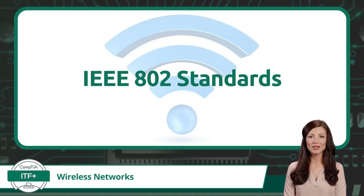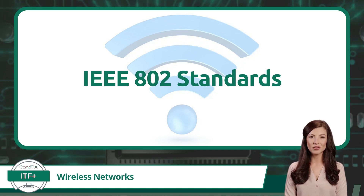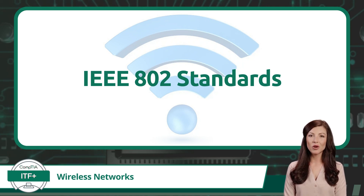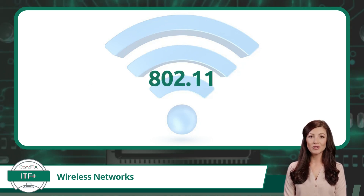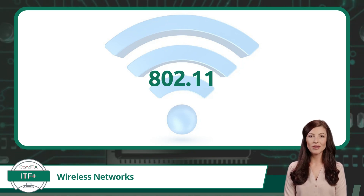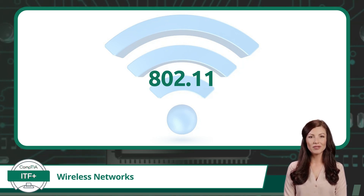Now we know who develops the standards for Wi-Fi. Out of all the standards compiled by the IEEE, the numerically labeled 802 set of standards are the standards that pertain to local area networks, or LAN communications. From here we need to break open and look at a small subset of the 802 standards. This subset is labeled 802.11. 802.11 is an evolving family of specifications for wireless local area networks, or WLANs.